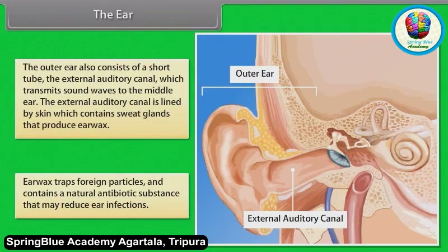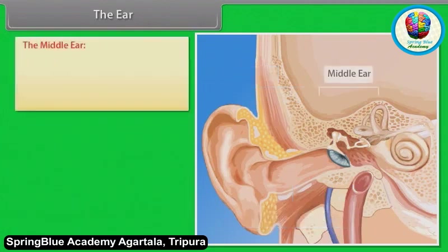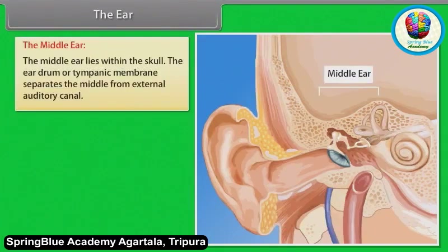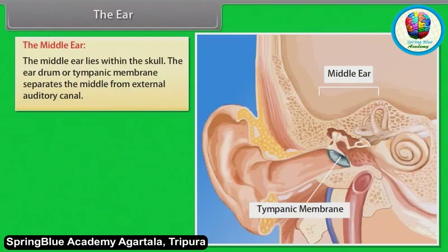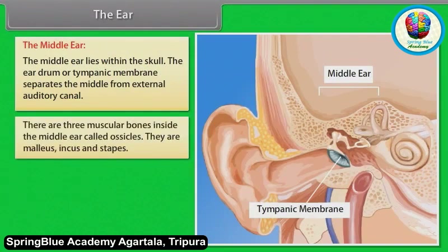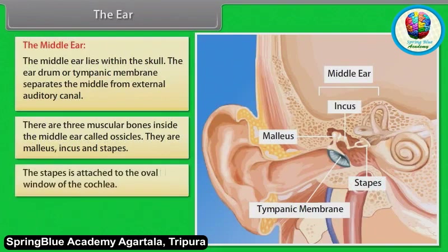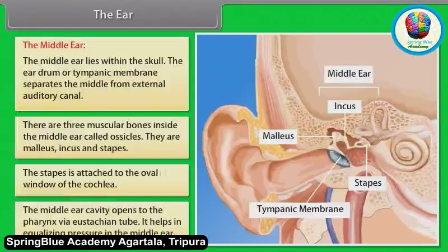The external auditory canal is lined by skin containing sweat glands that produce earwax. Earwax traps foreign particles and contains a natural antibiotic substance that may reduce ear infections. The middle ear lies within the skull. The eardrum or tympanic membrane separates the middle ear from the external auditory canal. There are three small bones inside the middle ear called ossicles: malleus, incus, and stapes. The stapes are attached to the oval window of the cochlea. The middle ear also opens to the pharynx via the eustachian tube, which helps equalize pressure in the middle ear.